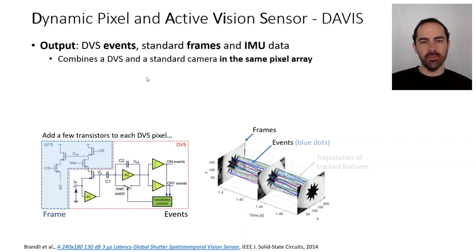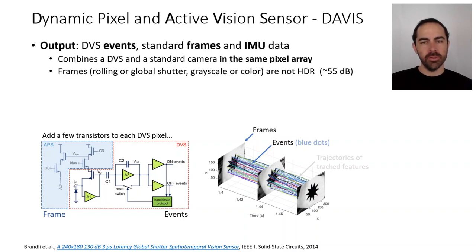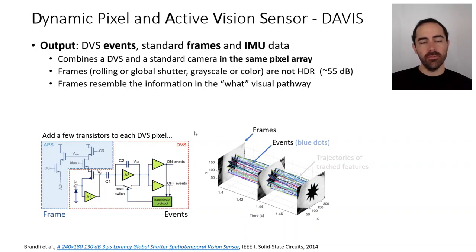Every pixel of the DAVIS has a part that is the DVS pixel — the change detector. Adding a few transistors to each DVS pixel allows readout of the grayscale value. This is the part of the pixel that generates the frames. The frames could be rolling or global shutter, and grayscale or color, but they are not high dynamic range — they have a limited range of about 55 decibels.